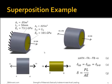Here is an example of a statically indeterminate problem that I'm going to use the superposition method to solve. The first thing I'm going to do is derive the statics equation, which is: 20 kN minus force FA minus force FB equals 0.